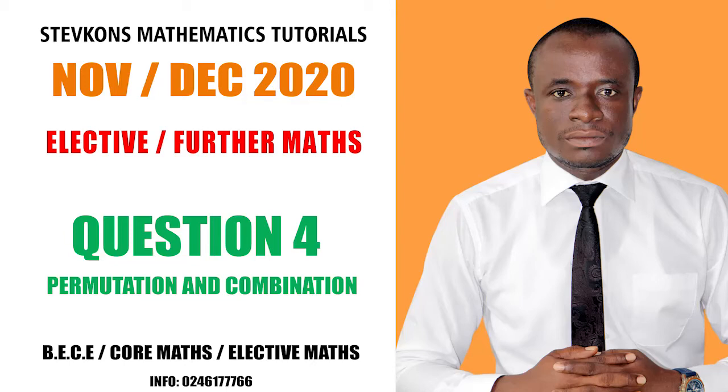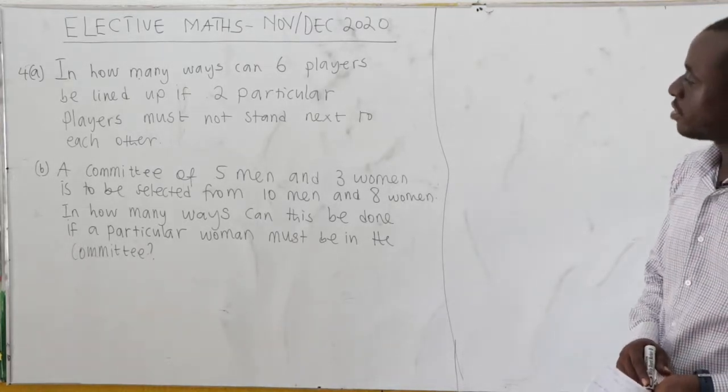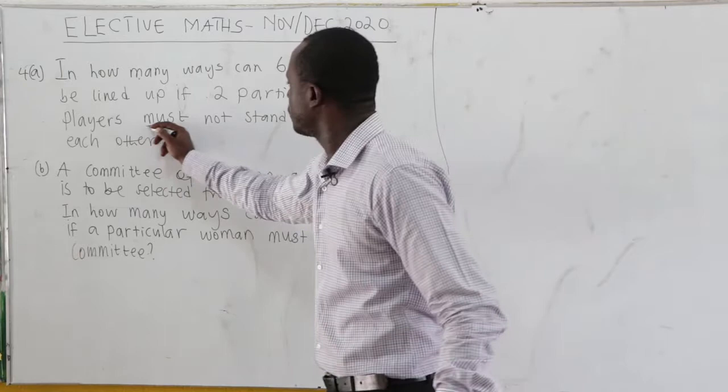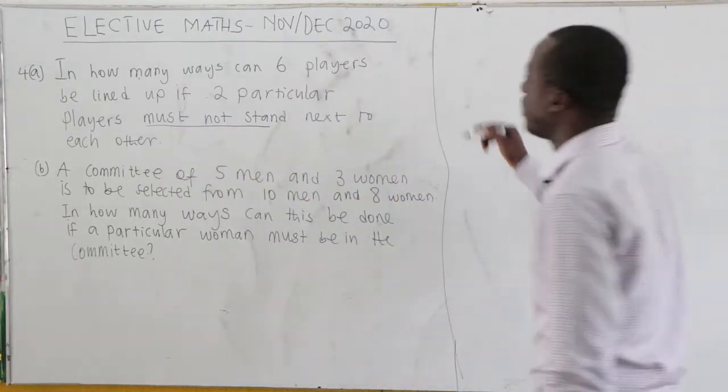November/December 2020, question number 4e. In how many ways can 6 players be lined up if 2 particular players must not stand next to each other? So this is the condition: 2 particular players must not stand next to each other.